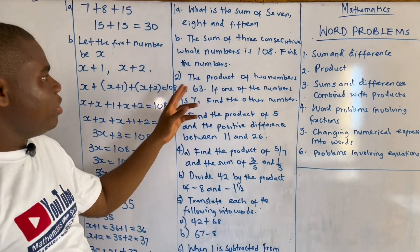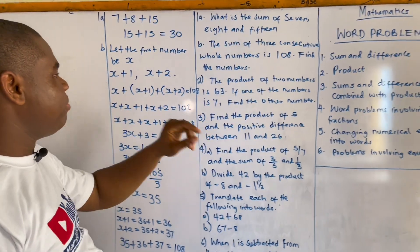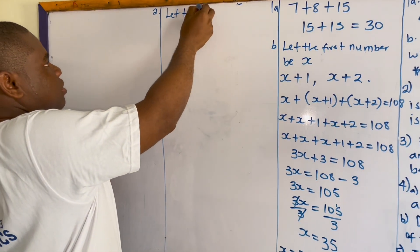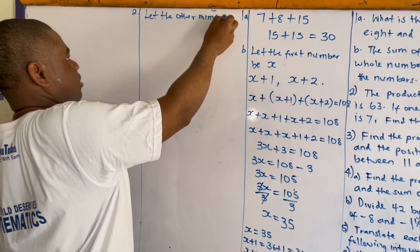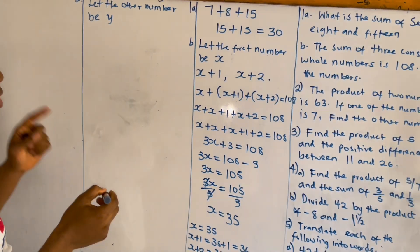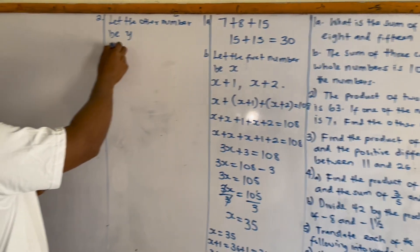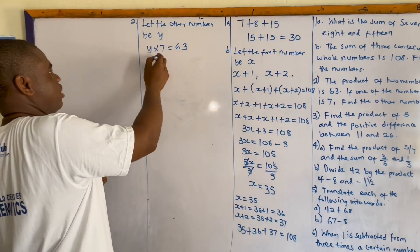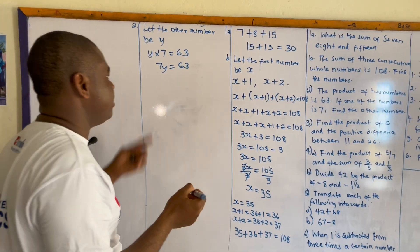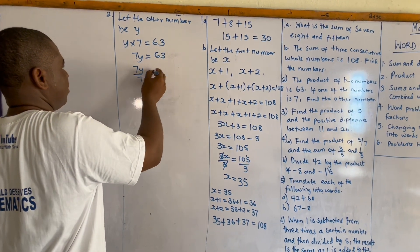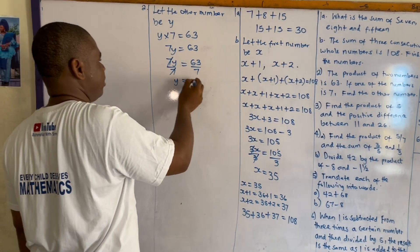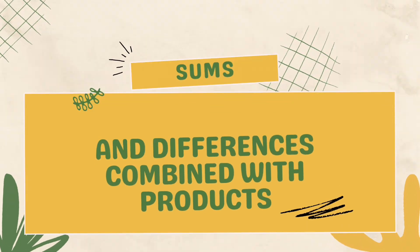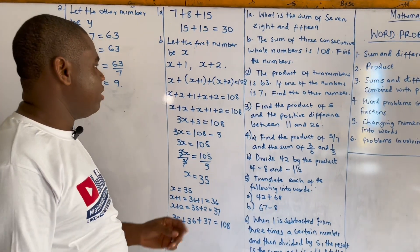For example two: the product of two numbers is 63. If one of the numbers is seven, find the other number. Let the other number be y. Since the product of two numbers is 63, we have y times seven equals 63, which gives us seven y equals 63. Dividing both sides by seven, y equals nine.